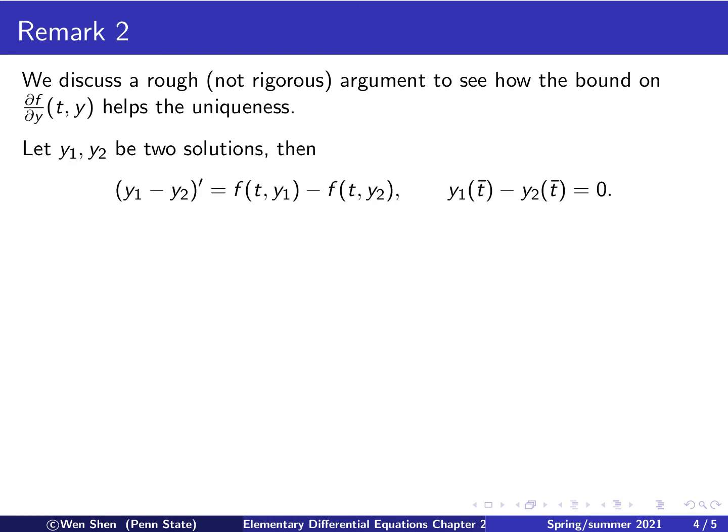Remark two. We will now have a rough argument. I want to stress that this is not a rigorous one, it's not a complete proof, but it's kind of an argument to help us understand how the bound we put here on the partial derivative would help us establish uniqueness. So we want to show uniqueness. Then let's assume that there are two solutions, y1 and y2. Since they both are solutions, they both satisfy the equation.